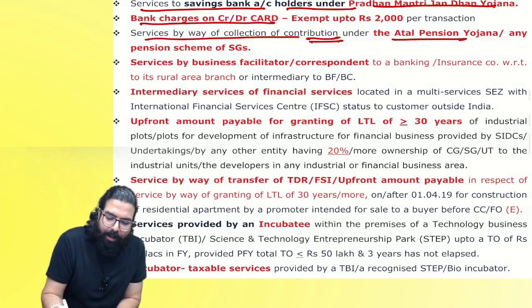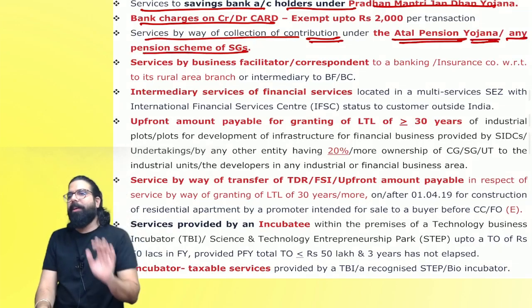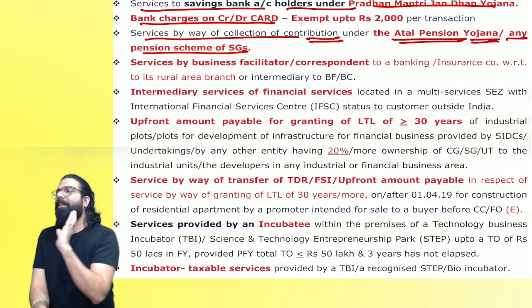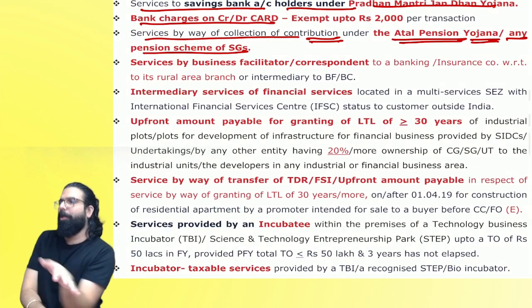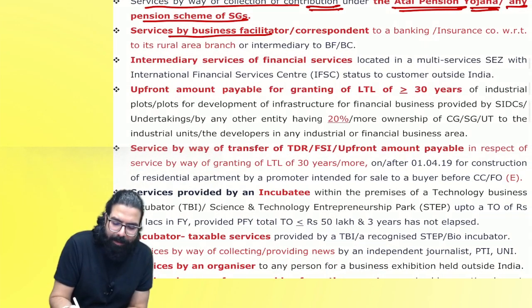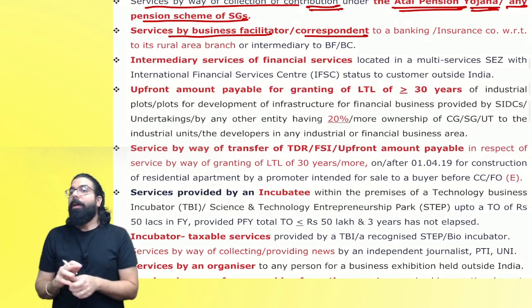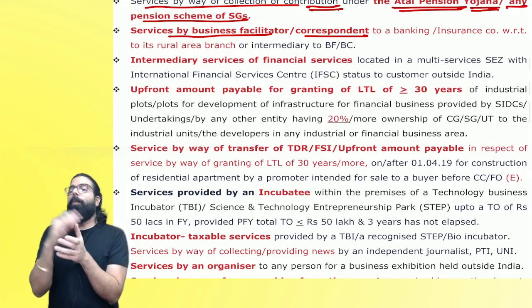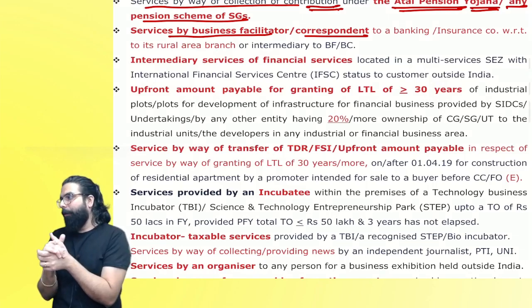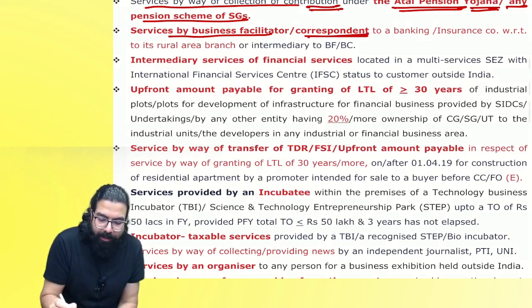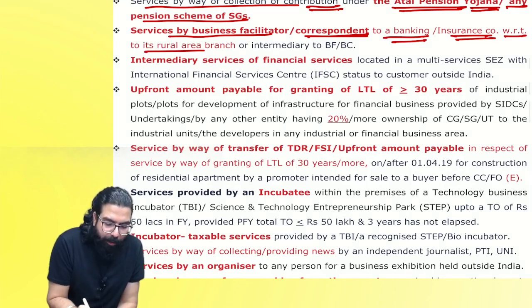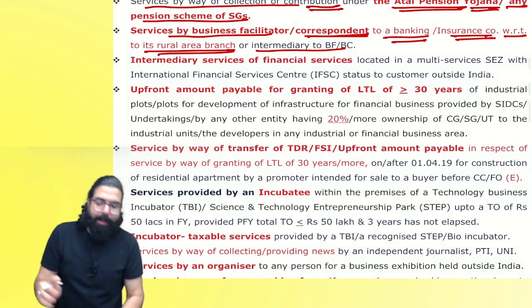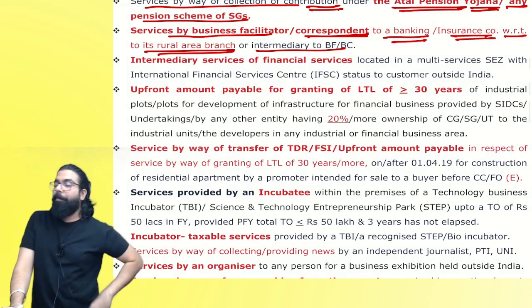Services by way of collection of contribution under the Atal Pension Yojana or any state government pension scheme — if any collection charges are taken for collection of pension, there will be no GST. Do you remember business facilitator and business correspondent? Their services — or their intermediary's services — to a banking company or insurance company with respect to a rural area branch will always be exempt. Even their intermediary's services will be exempt. Government wants to promote banking and insurance services in rural areas, hence no GST.